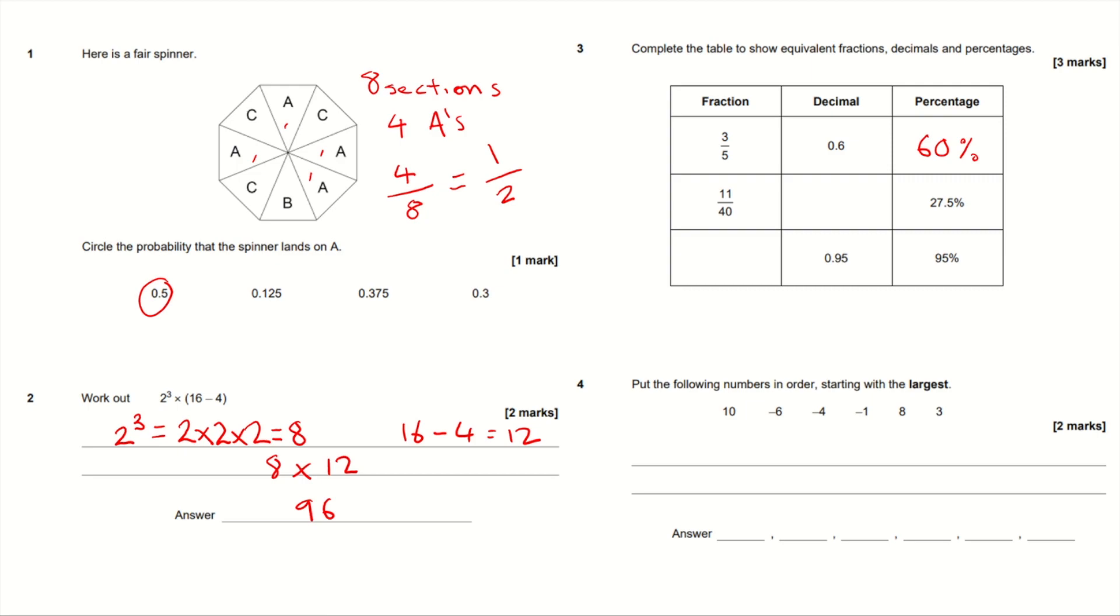Well, 0.6 is 60%. So we have 11 over 40. To work that out as a decimal would be quite tricky, but if we look at the percentage here, 27.5%, if we divide that by 100, we are going to get 0.275.